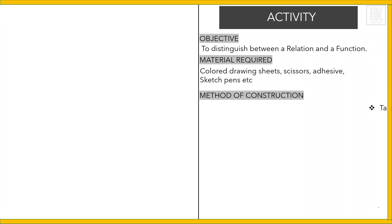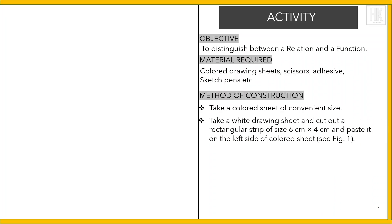Method of construction: Take a colored sheet of convenient size. Now take a white drawing sheet and cut out a rectangular strip of size 6 centimeter by 4 centimeter and paste on the left side of the colored sheet. See figure one. Mark three dots on the strip and mark them as a, b, and c.